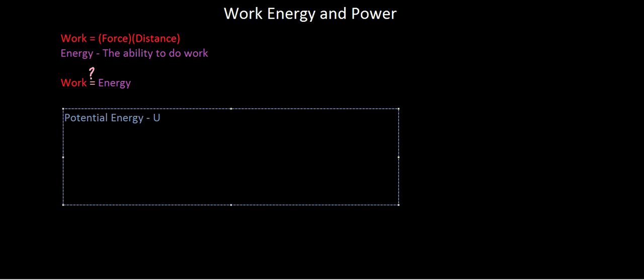The first one they give you is potential energy, and they use the variable U for potential energy. The second one they give you is kinetic energy, and they give you the letter K, which makes a little bit more sense as the variable for kinetic energy. And the difference between potential and kinetic energy is essentially simplified as potential energy could move, kinetic energy is moving energy.